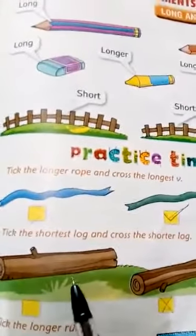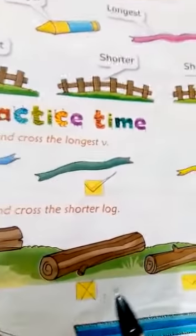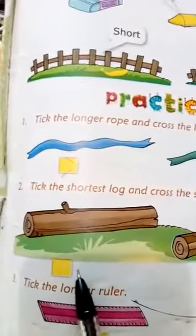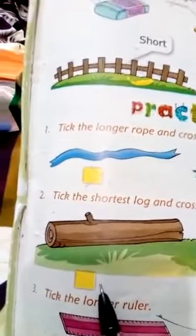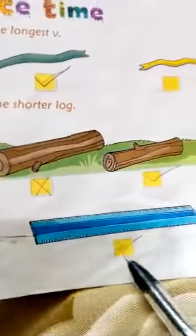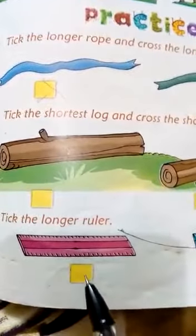In the same way, you will see the same way, and this object is short. There will also be three objects. Click the shortest rope and cross the shorter rope. This object is short — cross — and this is the shortest. Tick the longer ruler; this one is longer, cross, and this one is longer, and this one is longer.